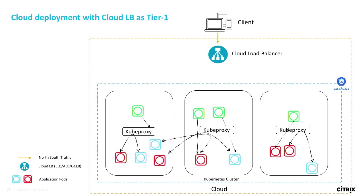When running in the cloud, you can use the cloud-native load balancer — ELB in Amazon, Azure Load Balancer in Azure, or Google Compute Load Balancer — as the layer-4 load balancer, and run the CPX inside the cluster for layer-7 functions.